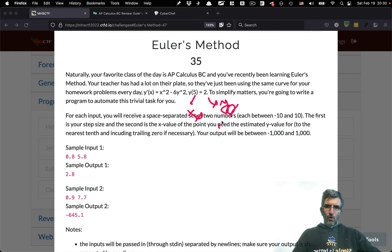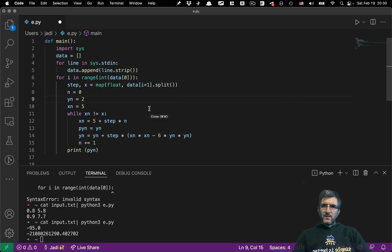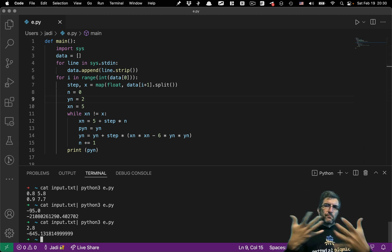So y0 or as I call it yn is 2 when I begin. And xn is 5. Now it's better. And now we have the correct answer.